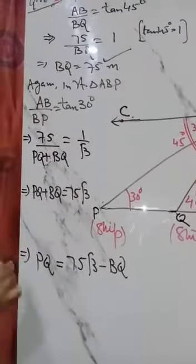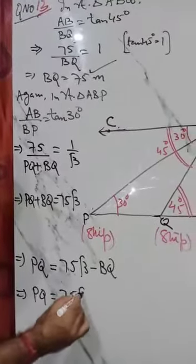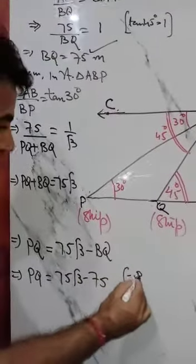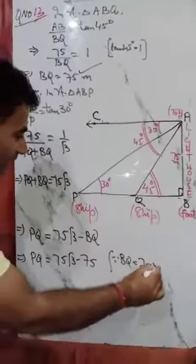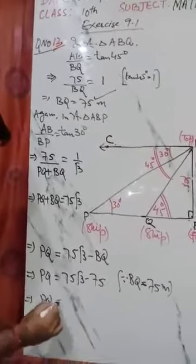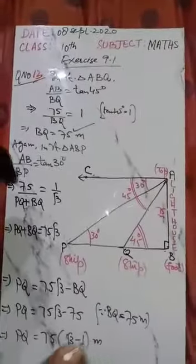So putting: PQ equals 75 root 3 minus 75. We have PQ is equal to 75 times (root 3 minus 1) meter.